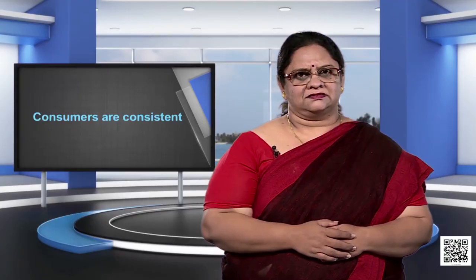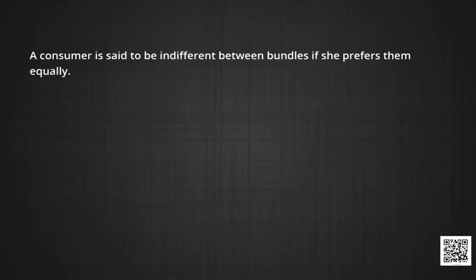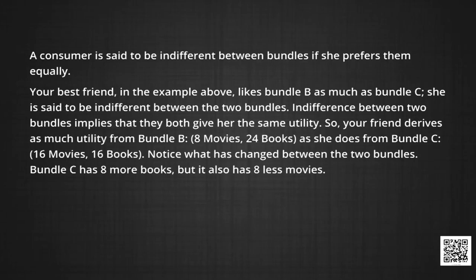Consumers are consistent — that is the third assumption we make. In other words, a consumer who has ranked one bundle over another will always prefer the first bundle to the second; she will not switch preferences. A consumer is said to be indifferent between bundles if she prefers them equally. In the example we discussed above, your best friend likes bundle B as much as she likes bundle C — she is said to be indifferent between the two bundles.